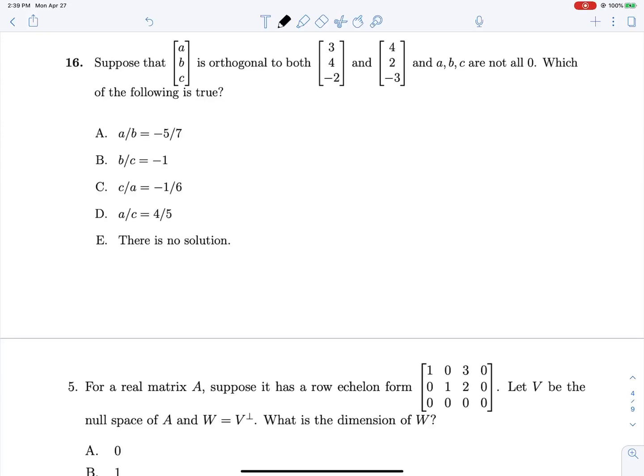Problem 16: Suppose that ABC is orthogonal to both of these vectors. Which of the following is true? This is a cross product in disguise. We can just take the cross product of 3, 4, negative 2 and 4, 2, negative 3 to get the vector that is always orthogonal to both of these other vectors. So this cross product gives us negative 12 plus 4 is negative 8, then negative 8 plus 9 is 1, and 6 minus 16 is negative 10.